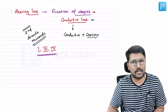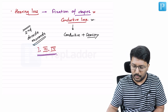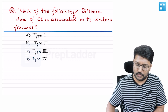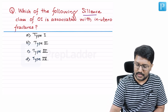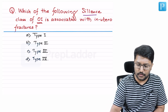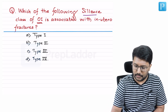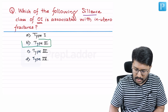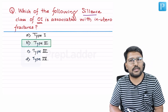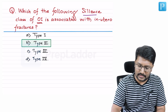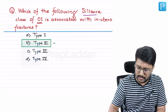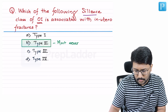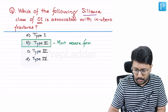To answer question number one: which Sillence class of osteogenesis imperfecta is associated with in utero fractures? The correct answer is Type 2. Type 2 is the most severe form of osteogenesis imperfecta and is associated with in utero fractures.